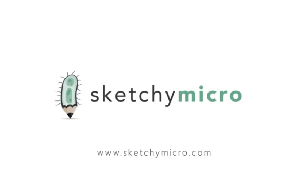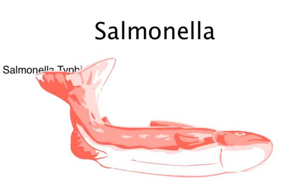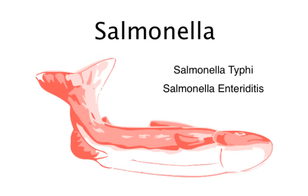Hi, welcome back to Sketching Micro. This is Andrew. We're going to be covering Salmonella, and specifically two subspecies of Salmonella: Salmonella typhi and Salmonella enteritidis. Although these subspecies are very different, I think there are enough shared features that it warrants us including them in the same sketch. This way we can really clump together the commonalities and then highlight the differences. Let's get to sketching this out.